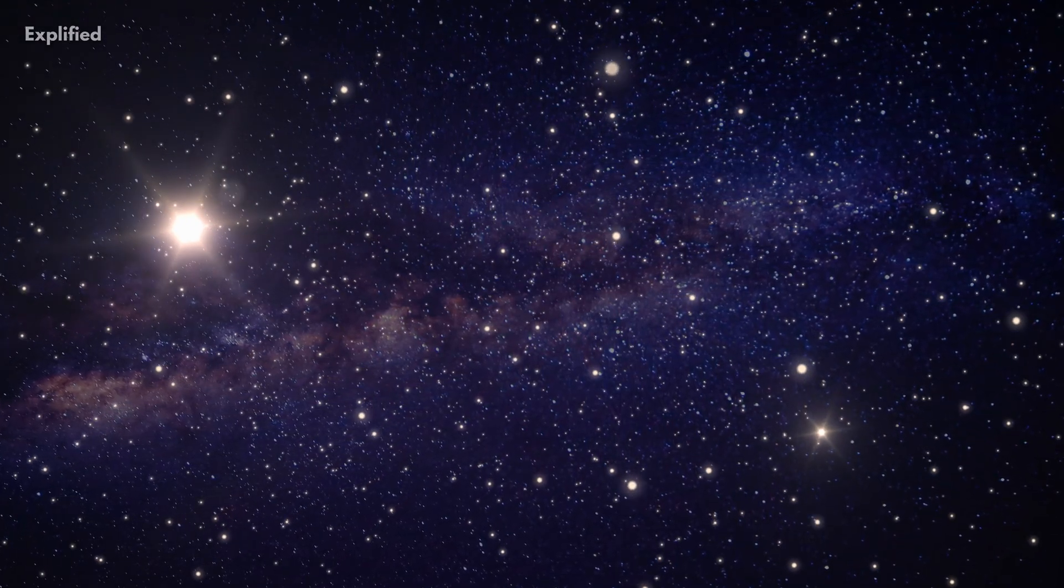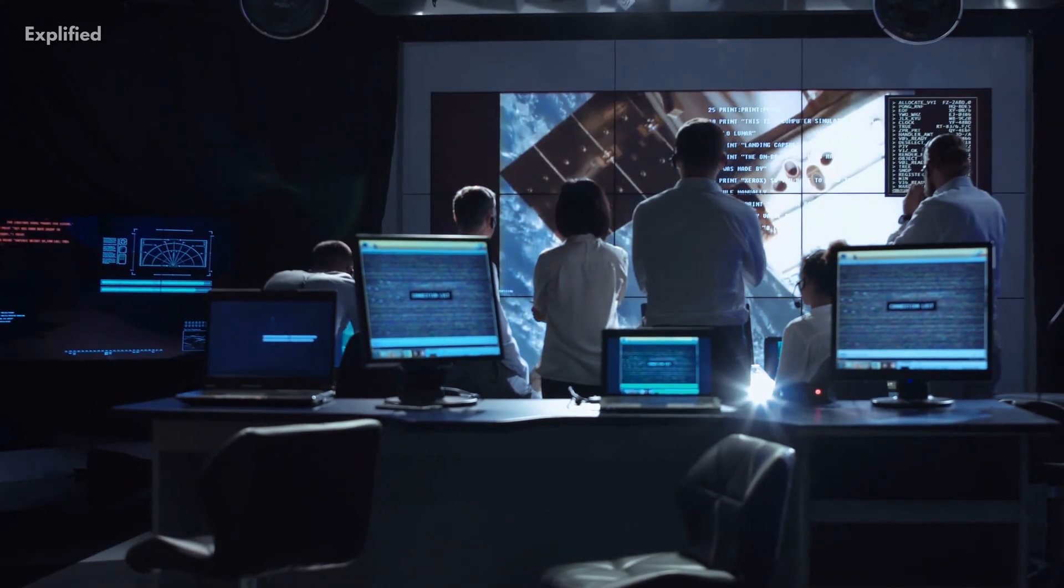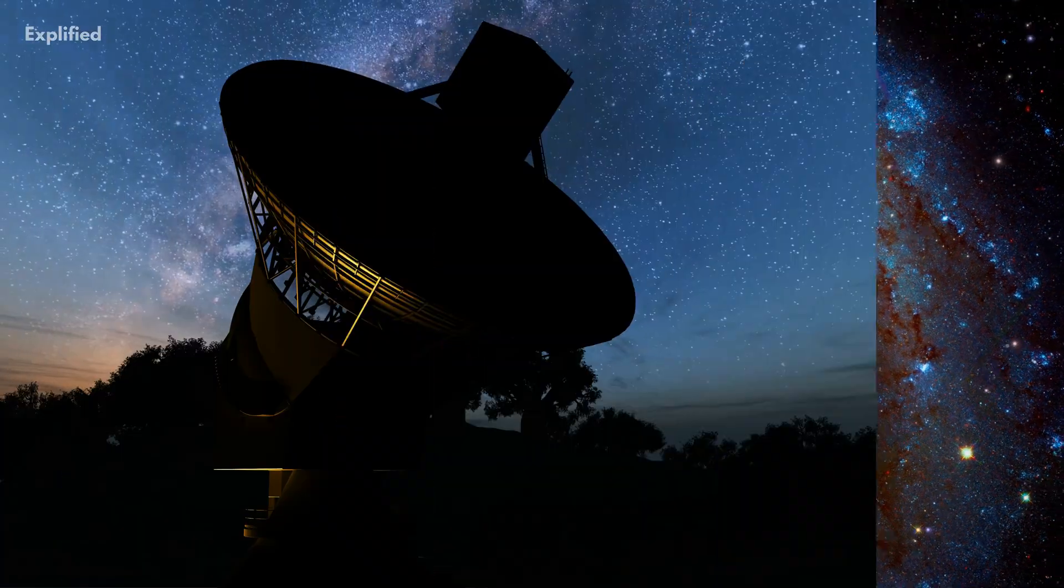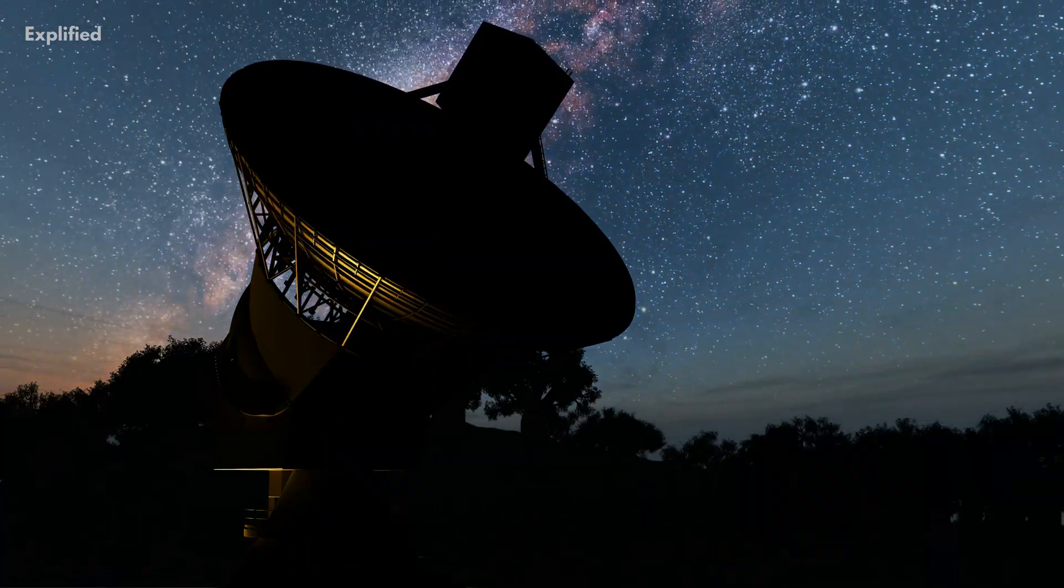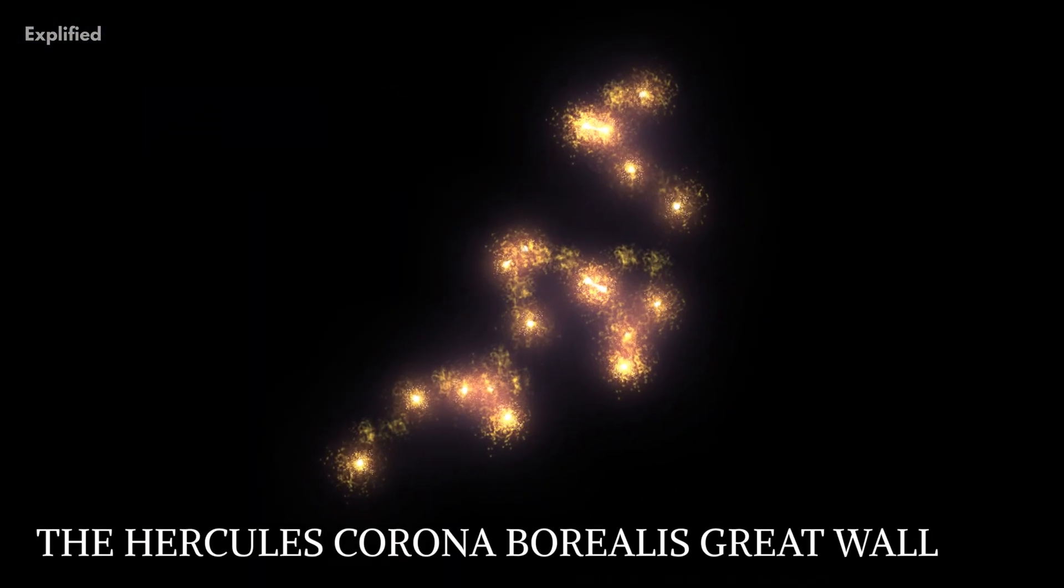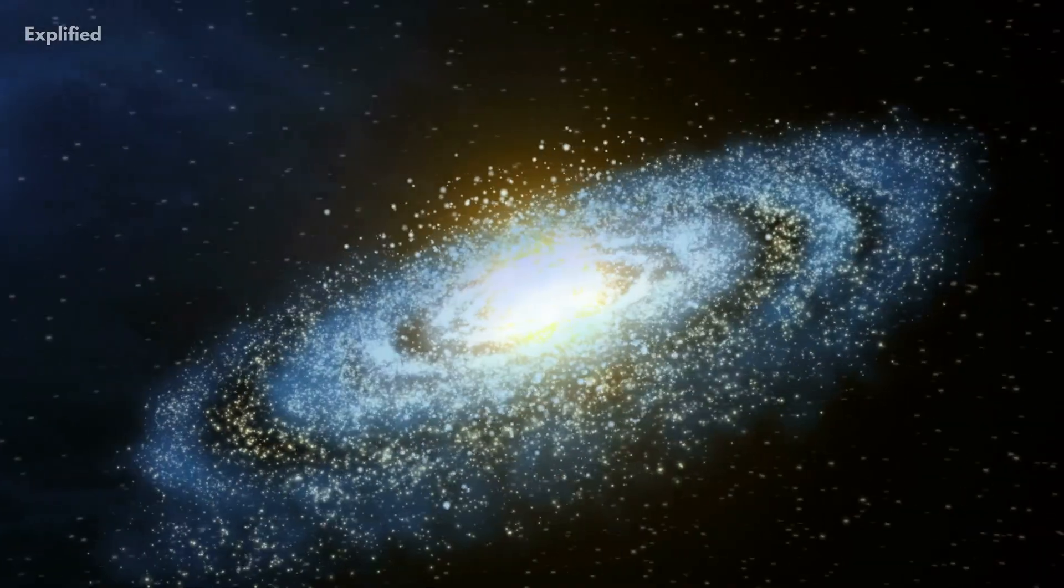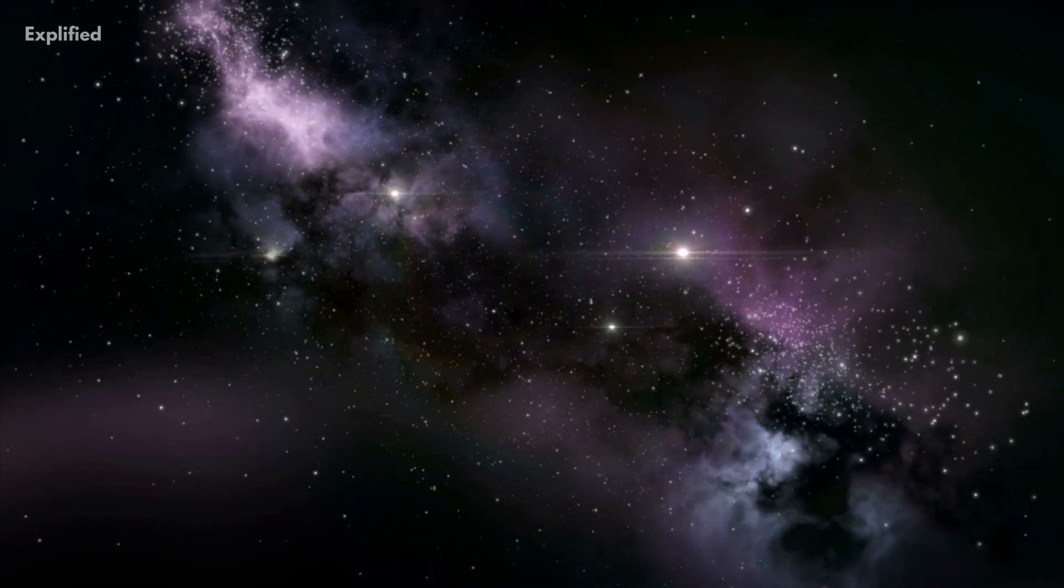It has rendered all scientists around the globe speechless. What is this gigantic structure? In November 2013, the largest known structure in our universe was discovered. It was called the Hercules-Corona Borealis Great Wall. It is about 10 billion light years in length. The Hercules-Corona Borealis Great Wall is a supercluster.